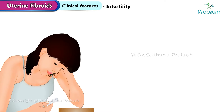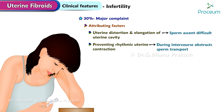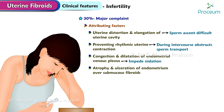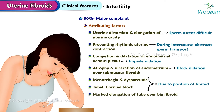Infertility, in 30% of cases, may be a major complaint. The probable contributing factors are: uterine distortion and elongation of the uterine cavity making sperm ascent difficult; preventing rhythmic uterine contraction due to fibroids during intercourse, obstructing sperm transport; congestion and dilatation of the endometrial venous plexus impeding nidation; atrophy and ulceration of the endometrium over the submucous fibroids blocking nidation; menorrhagia and dyspareunia; tubal corneal block due to position of the fibroid; marked elongation of the tube over a big fibroid; and associated salpingitis with tubal block.